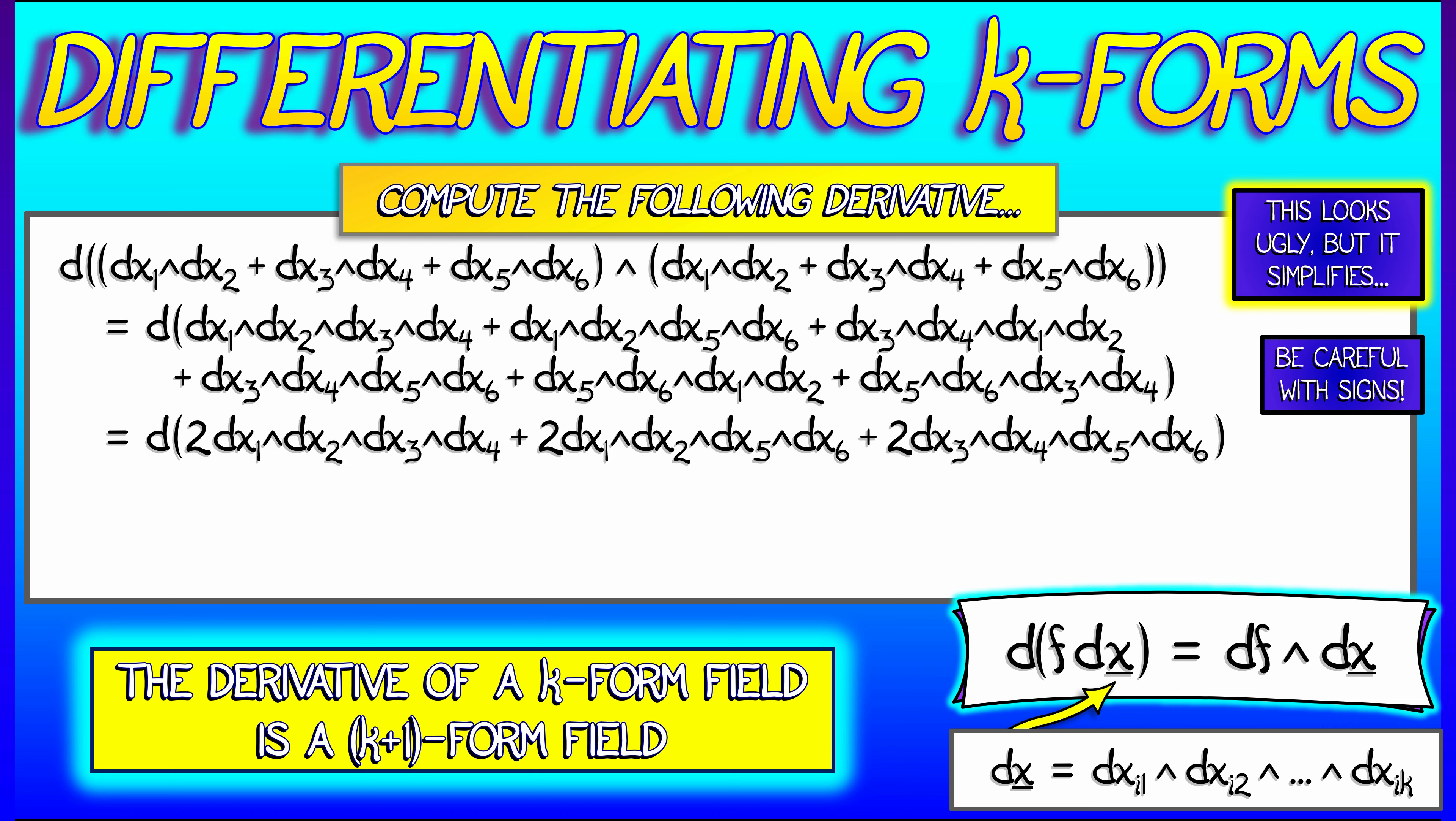But if you're careful with rearranging the terms, then what you will get is two dx1 wedge dx2 wedge dx3 wedge dx4, plus two dx1 wedge dx2 wedge dx5 wedge dx6, plus two dx3 wedge dx4 wedge dx5 wedge dx6. And now you have to take the derivative of that guy.